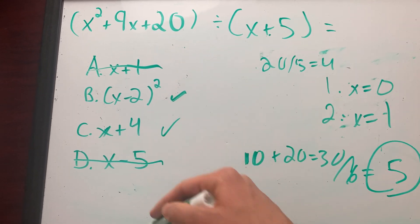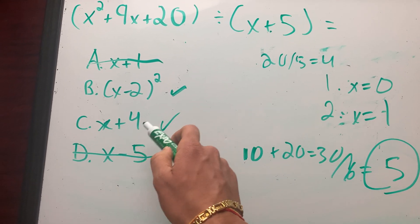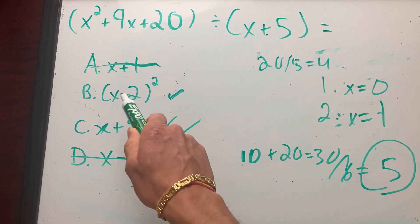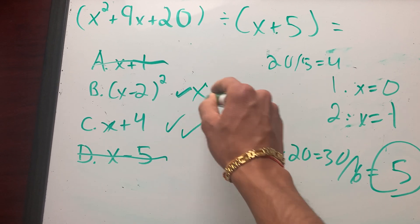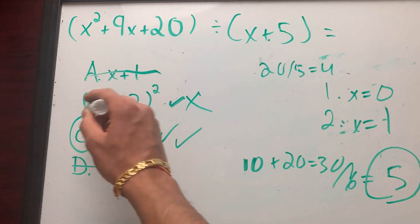So now I plug in one into these two and see which one gives me five. One plus four is five, so this works. One minus two is negative one squared, which is one, so that does not work. So C is the answer by process of elimination.